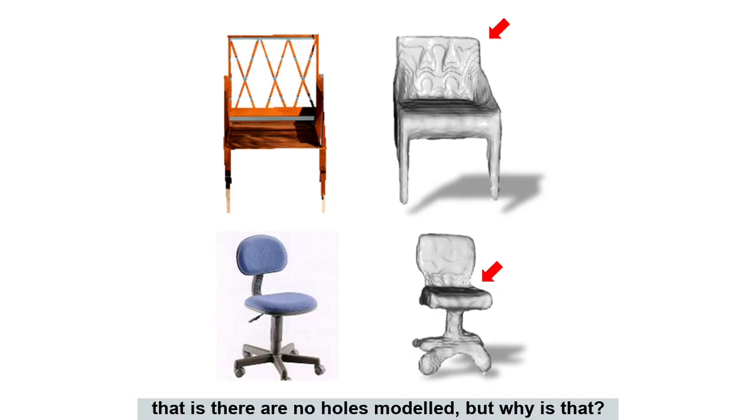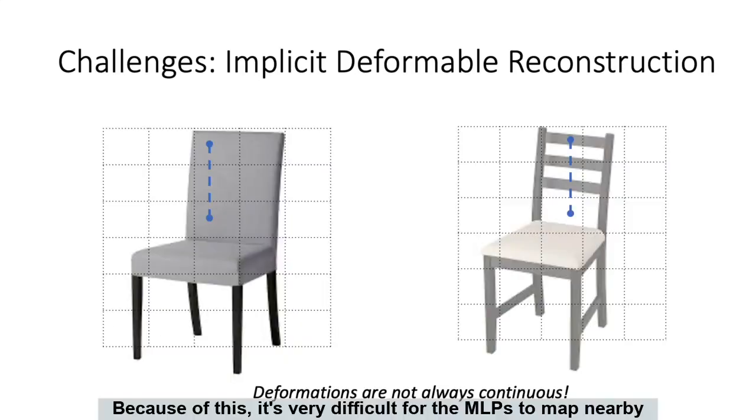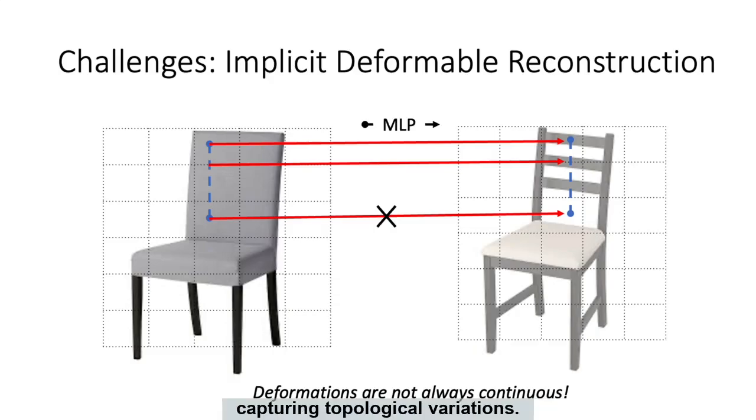But why is that? This is because of the inherent continuous nature of the MLPs. Because of this, it is very difficult for the MLPs to map nearby points in one chair shape to the discontinuous, faraway points in the other chair shape, thus leading to over-smooth reconstructions and difficulty in capturing topological variations.